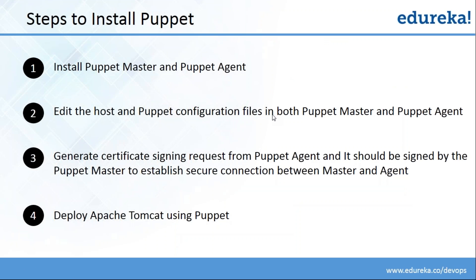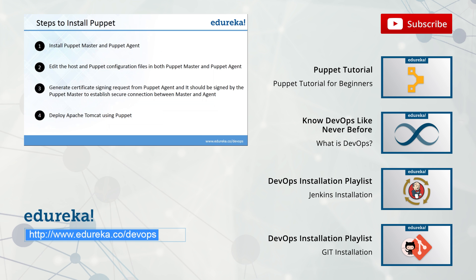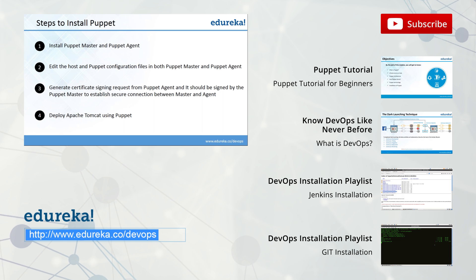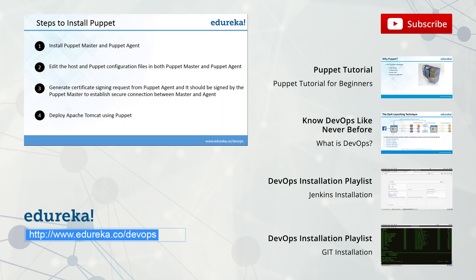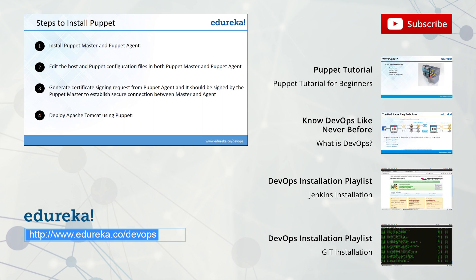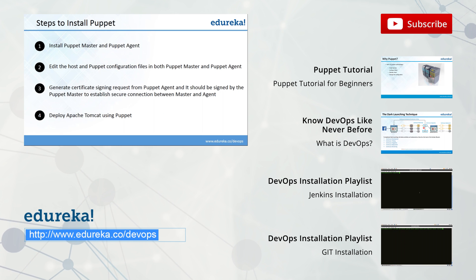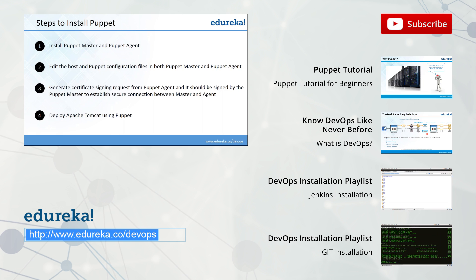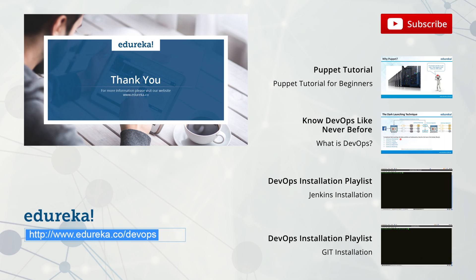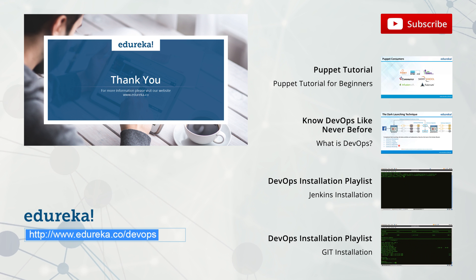Our fourth and final step is complete — that is to deploy Apache Tomcat version 9 using Puppet. Thank you for watching this video. You can comment your queries and questions. Do subscribe to our Edureka channel to learn more. Thank you and happy learning.